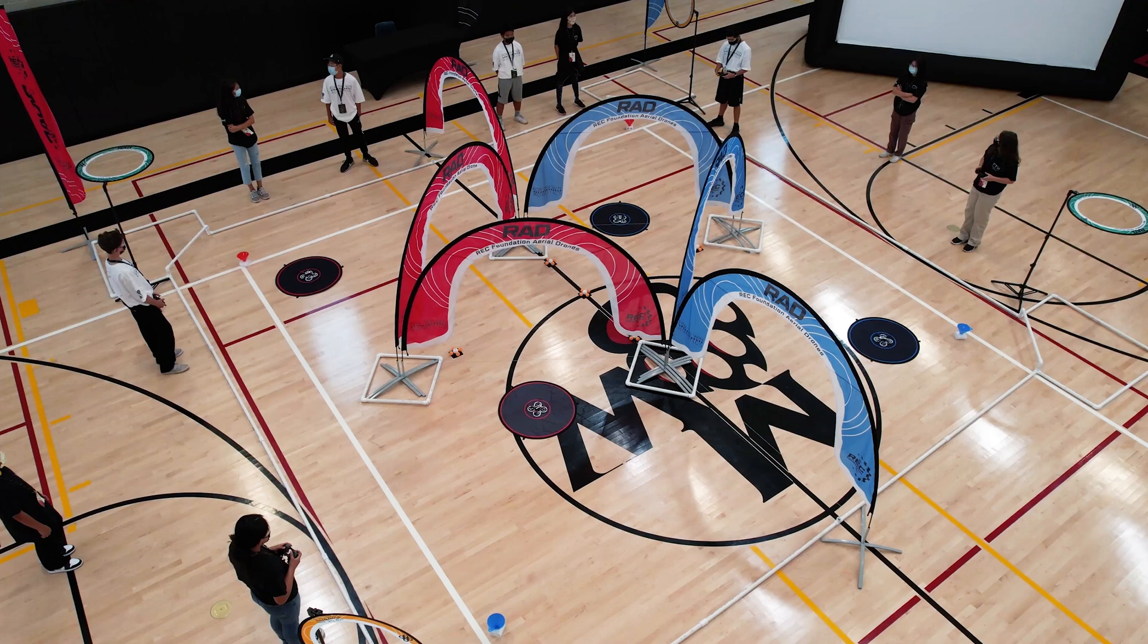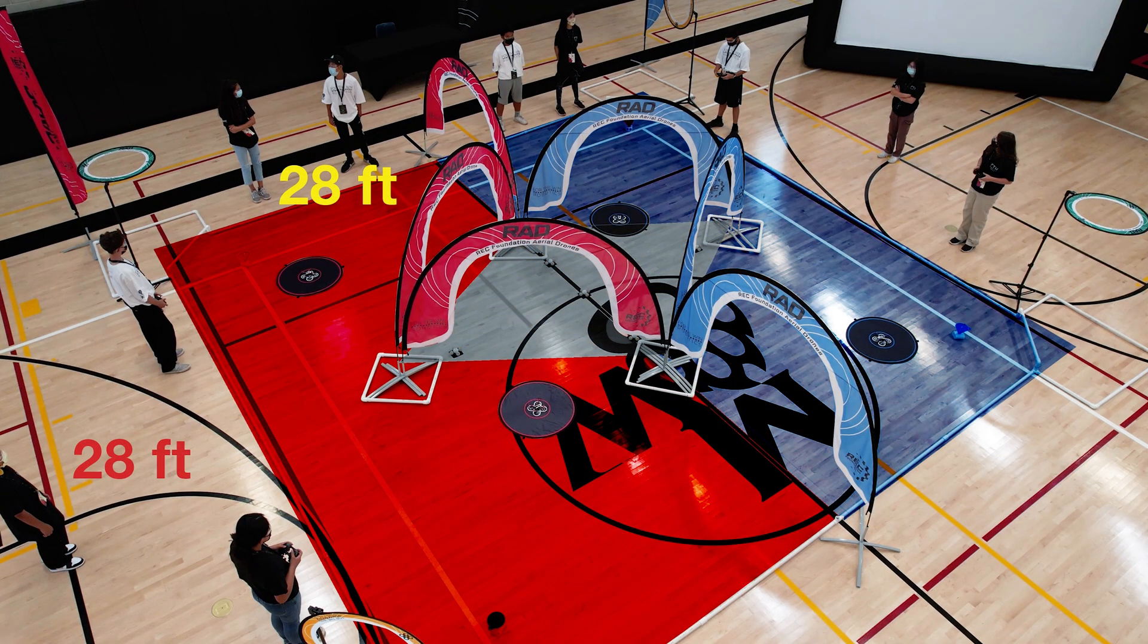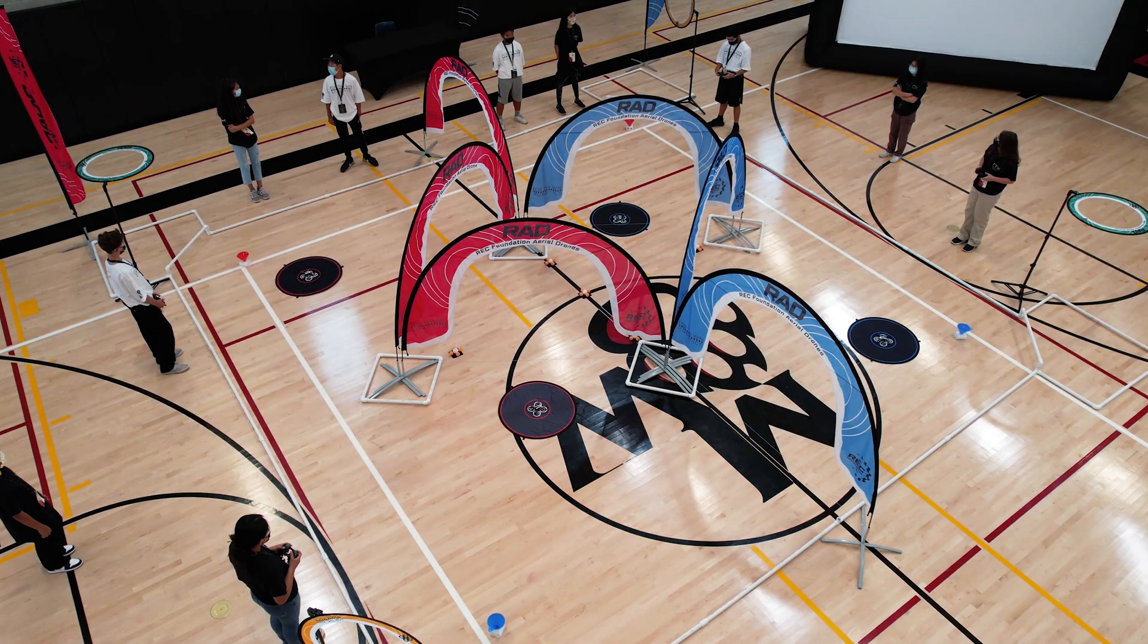Rad C Downdraft II is played on a 28 foot by 28 foot field by two alliances, one red and one blue, both made up of two teams each. The field is composed of red and blue neutral zones in addition to red and blue corner goals.